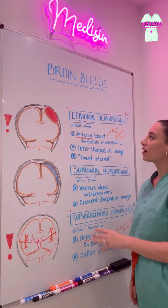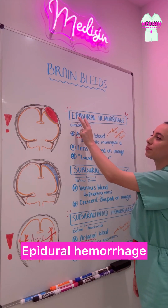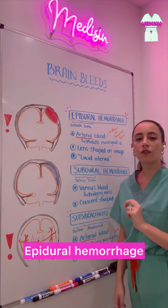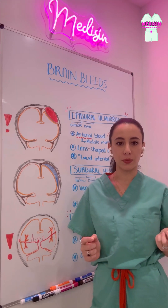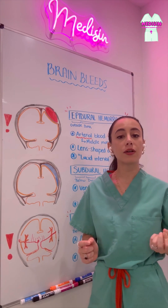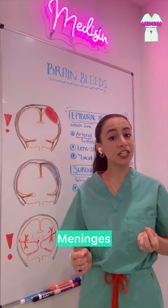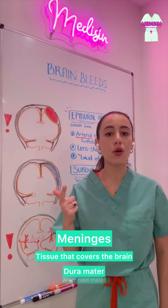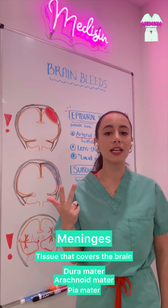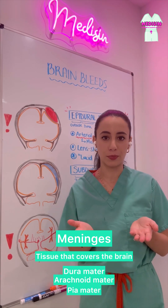First, we have epidural hemorrhages. Epi means outside, and dura refers to this thick covering that surrounds the brain. The dura is part of the meninges, and the meninges has three layers: the dura, arachnoid, and pia mater, all of which surround and protect the brain.